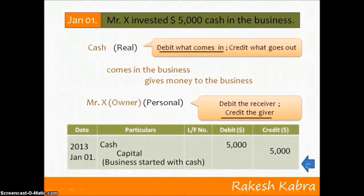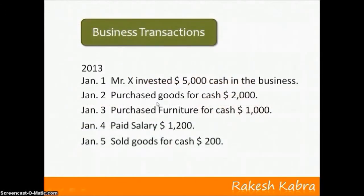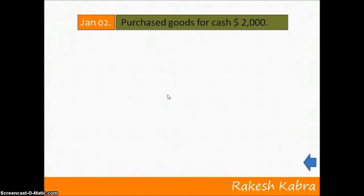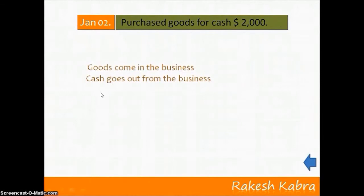Now let's see the second transaction: purchase goods for cash $2,000. To record this transaction, first we identify the accounts affected: Goods and Cash. Goods are affected because we purchased goods and they are coming into the business. Cash is affected because we paid cash to purchase the goods, so there is cash outflow from the business.